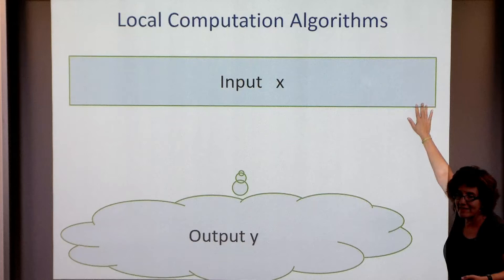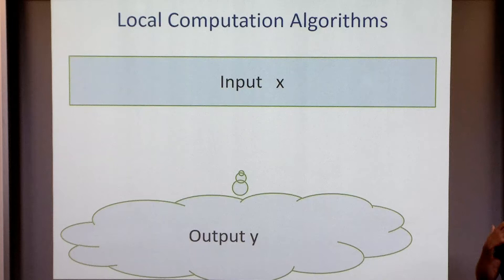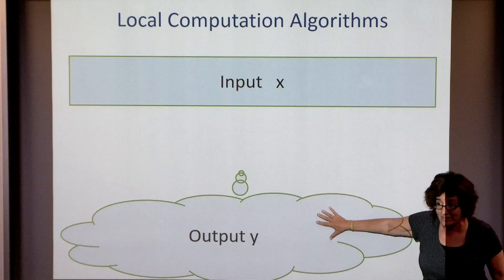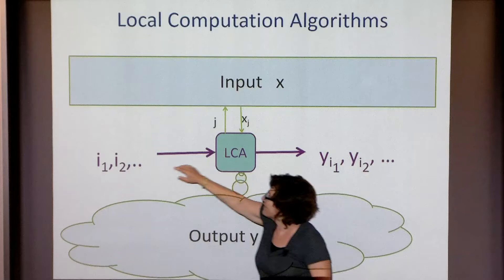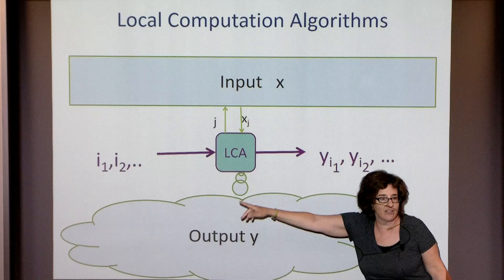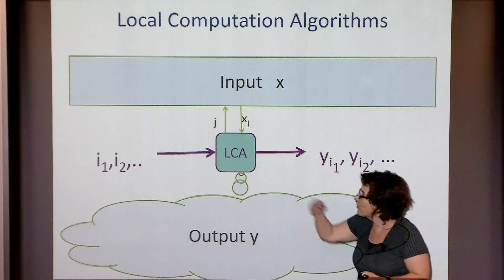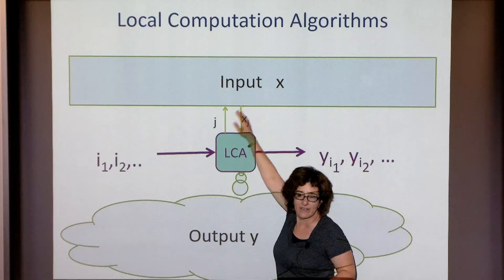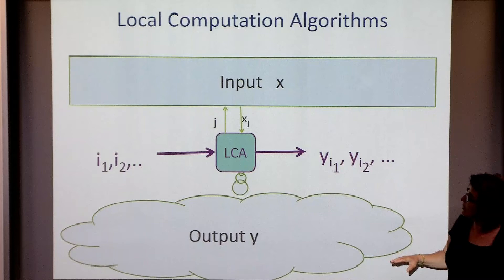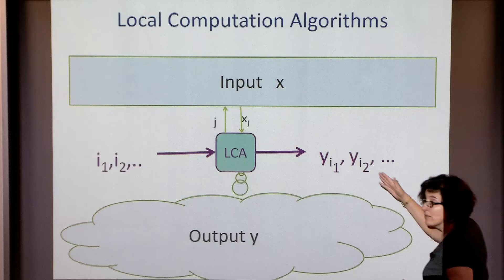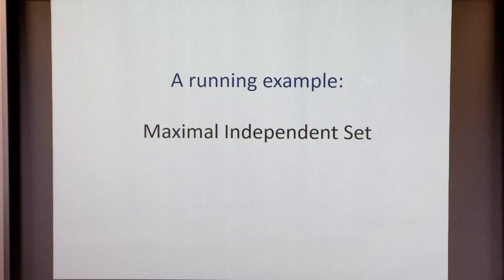In the model, you have some input x that is written down. In somebody's head there is an output y — what the algorithm wants to compute — but it just needs pieces of it. So we have a local computation algorithm that gets queries like i1, i2, i3 and is supposed to answer with the output of y at those locations. It's an online setting: you give it queries and it outputs answers. This LCA can make random access queries to the input wherever it wants, but it cannot query the output — that's what we're trying to compute. As a running example, let's use maximal independent set.